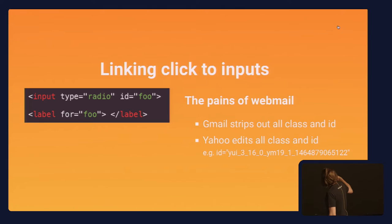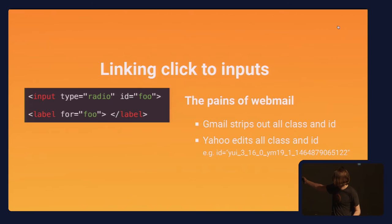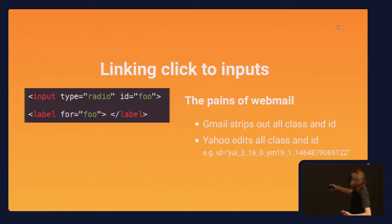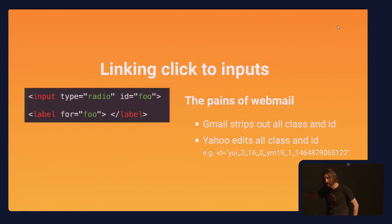The way we link clicks to inputs is with type radio button, ID foo, label for foo — pretty standard. However, with webmail, Gmail strips out all classes and IDs. So the ID is stripped out and the label for foo is now associated to nothing. Yahoo, on the other hand, will prefix and edit the IDs and classes — it changes id foo to something like id YUI_3_16_0 and so on. So for Yahoo, the input and label IDs don't match, and this doesn't work.